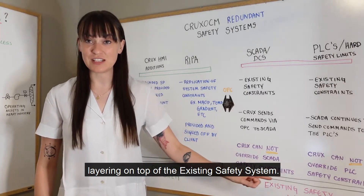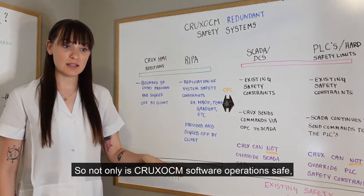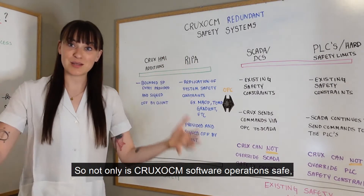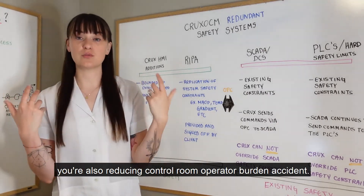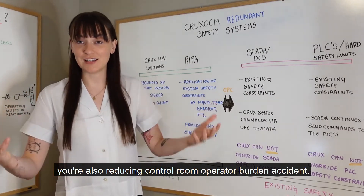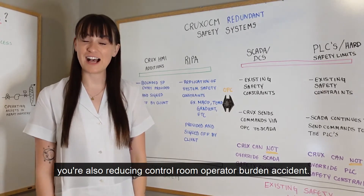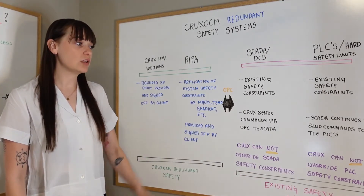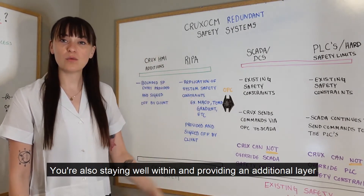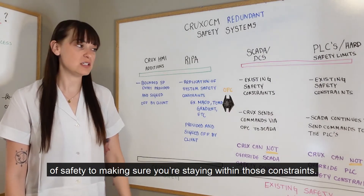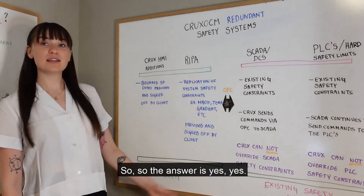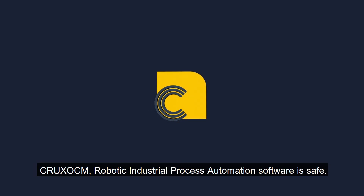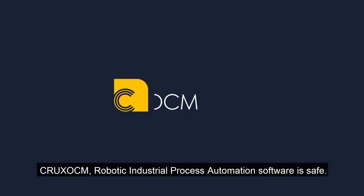You can see we have Crux OCM as a redundant safety system layering on top of the existing safety system. Not only is Crux OCM's software automation safe, but you're also reducing control room operator burden — which is the leading cause of accidents — while providing an additional layer of safety to ensure you stay within those constraints. So the answer is yes: Crux OCM's robotic industrial process automation software is safe.